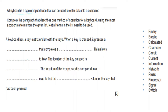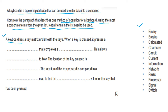A keyboard is a type of input device used to enter data into a computer. Complete the paragraph describing one method of operation for a keyboard. A keyboard has a key matrix underneath the keys. When a key is pressed, it presses a switch that completes a circuit.